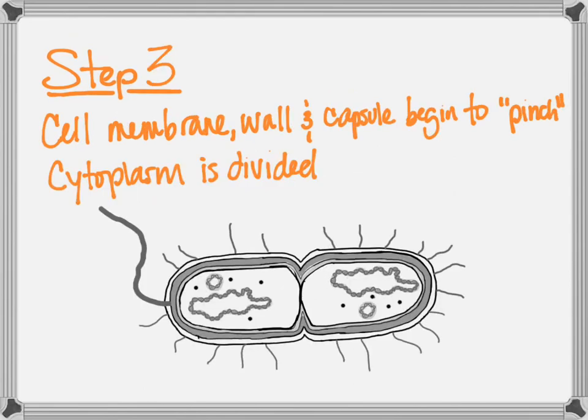Step three is really interesting, because the cell membrane, the cell wall, and the capsule all begin to squeeze together in the middle, pinching the cell in half. They divide the cytoplasm this way. The technical name for this step is cytokinesis, but you don't have to worry about that just yet.